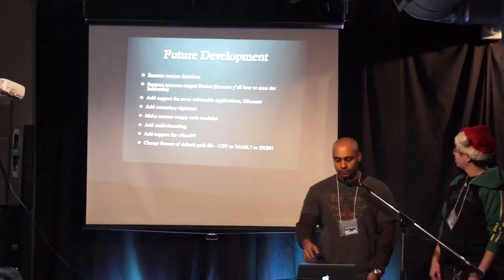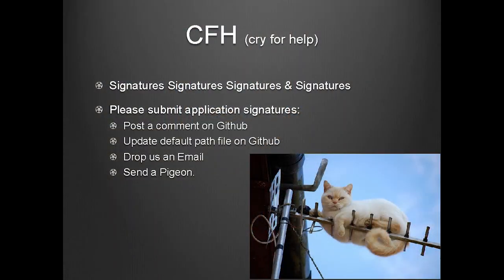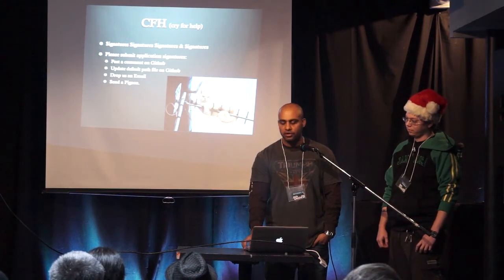Future development: we plan to implement smarter version detection, support more vulnerable applications, add a secondary signature, and add multi-threading. We're not sure if we'll be able to support vFeed — it's a vulnerability aggregator and it's pretty awesome. We're also working on changing the format of the default path.csv file so it's not 1980s style. We can definitely use signatures — if you come across applications, drop us a line, a tweet, post on GitHub, contribute to default path.csv. As soon as we have signatures, it becomes more popular with each one you put in.